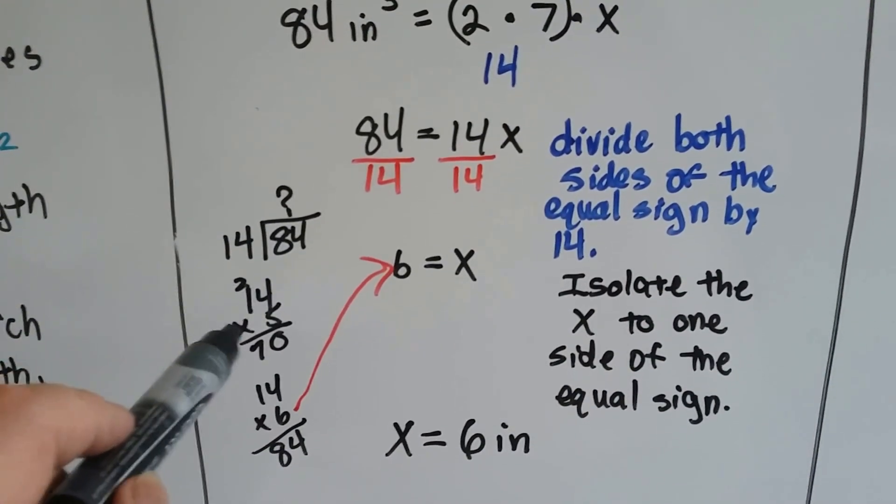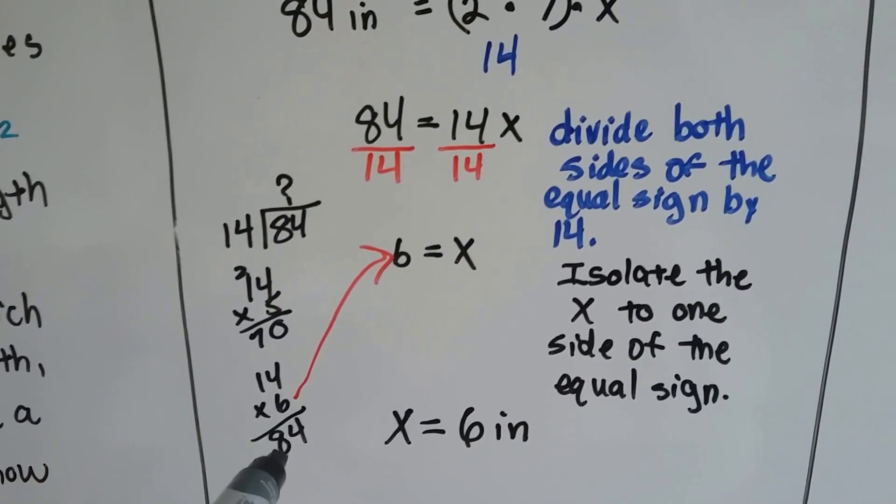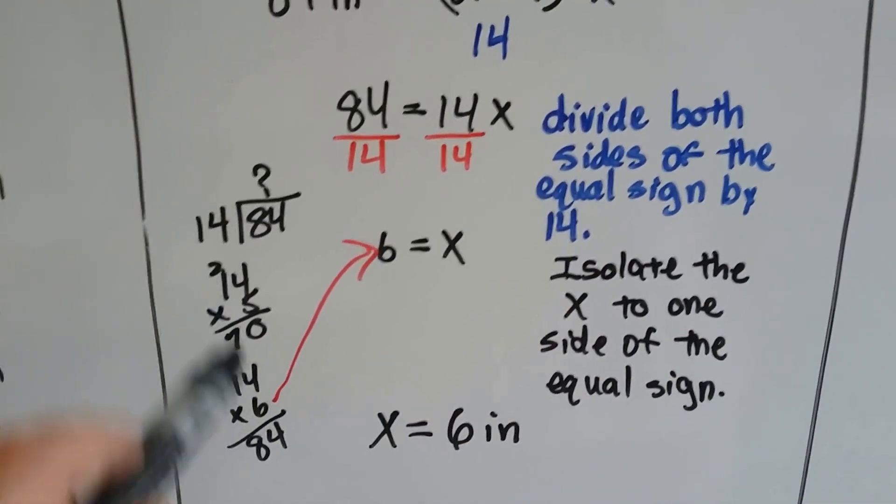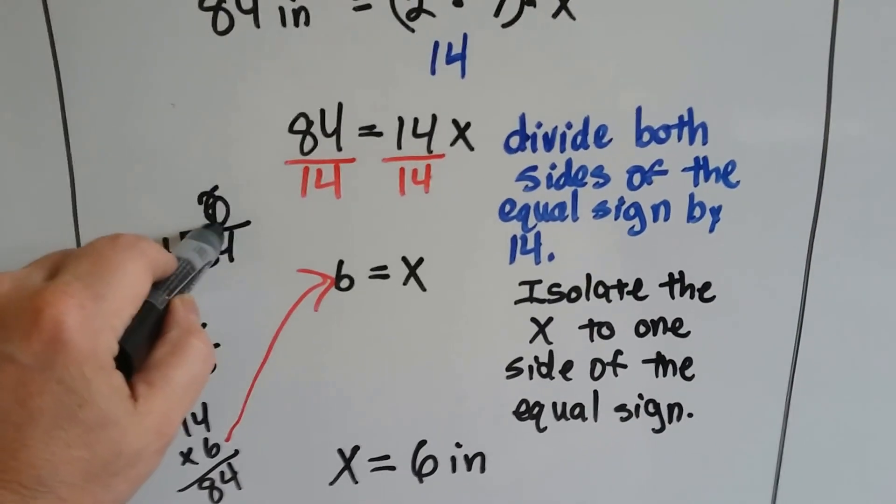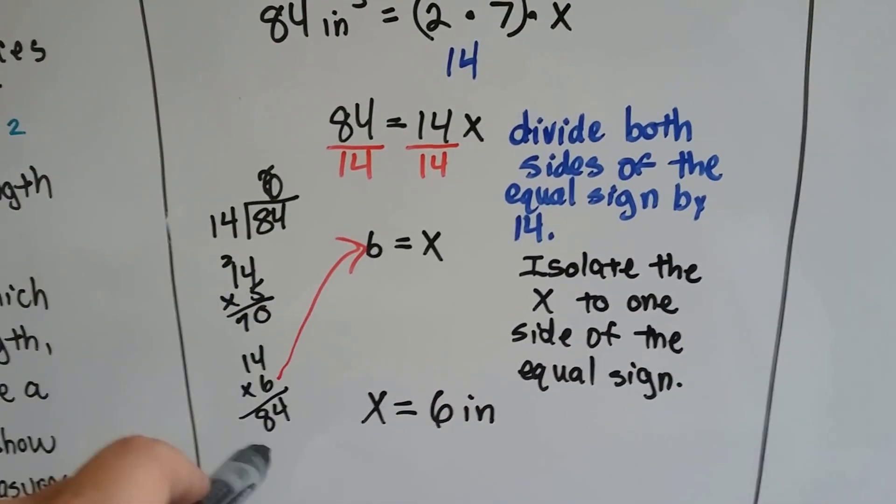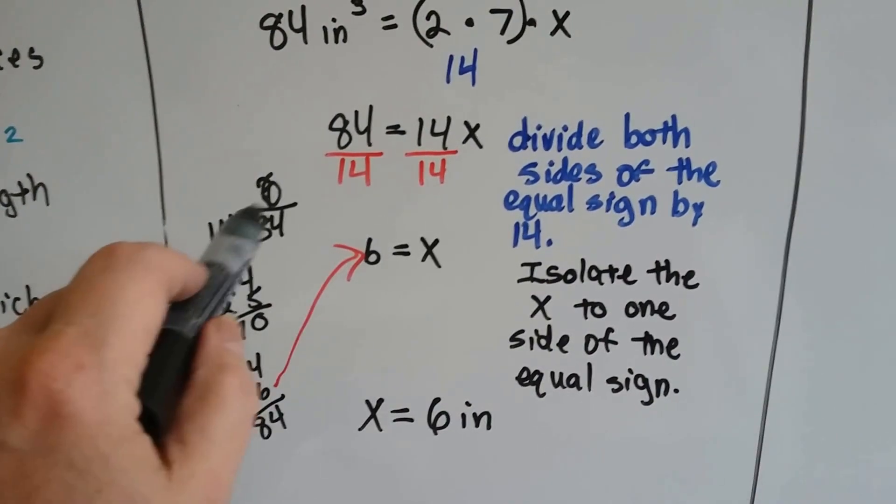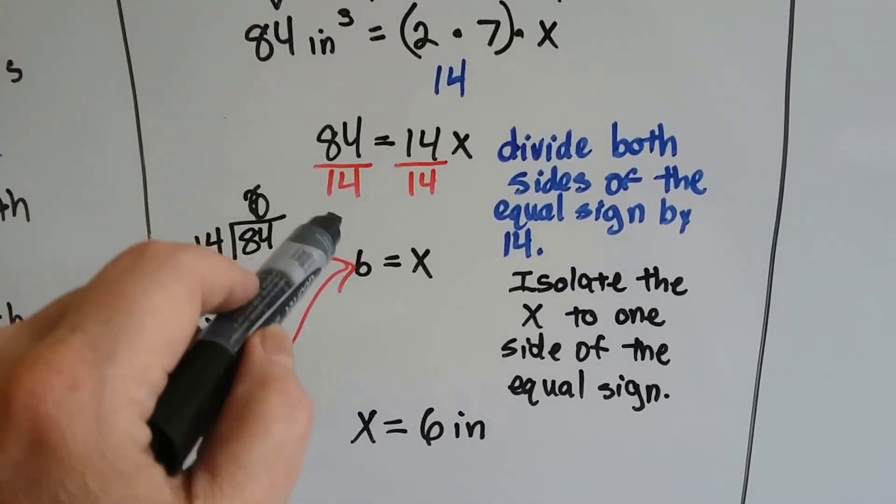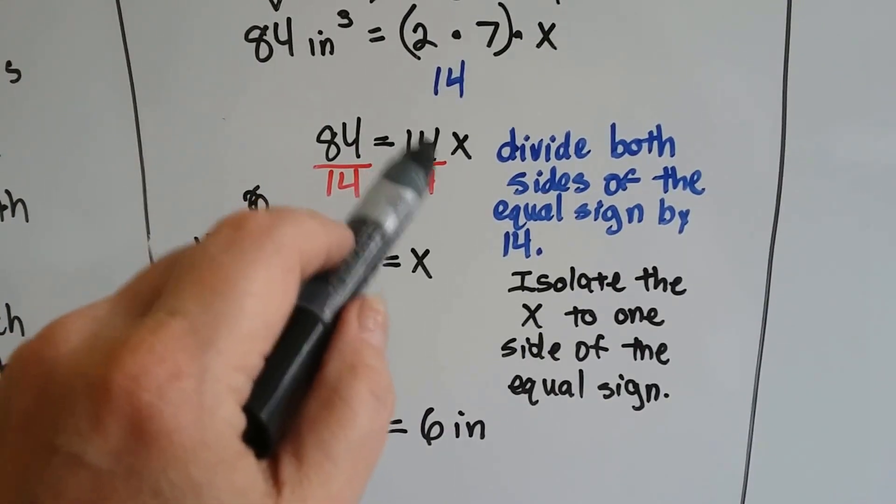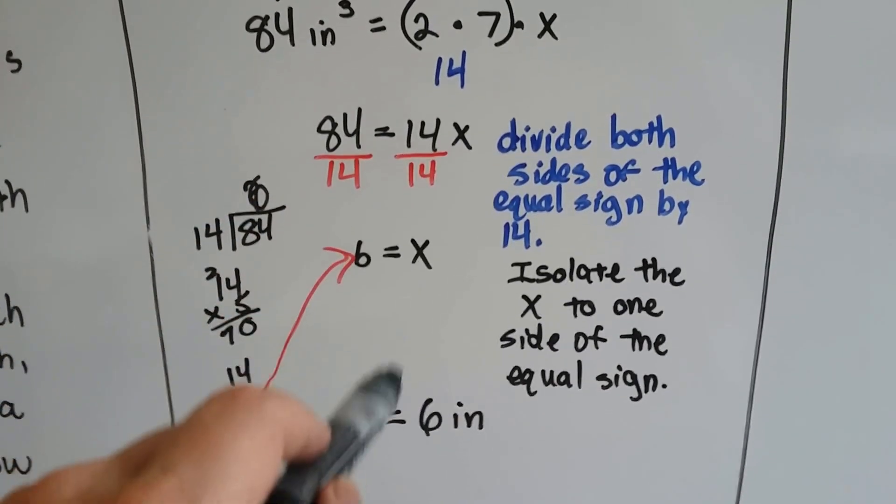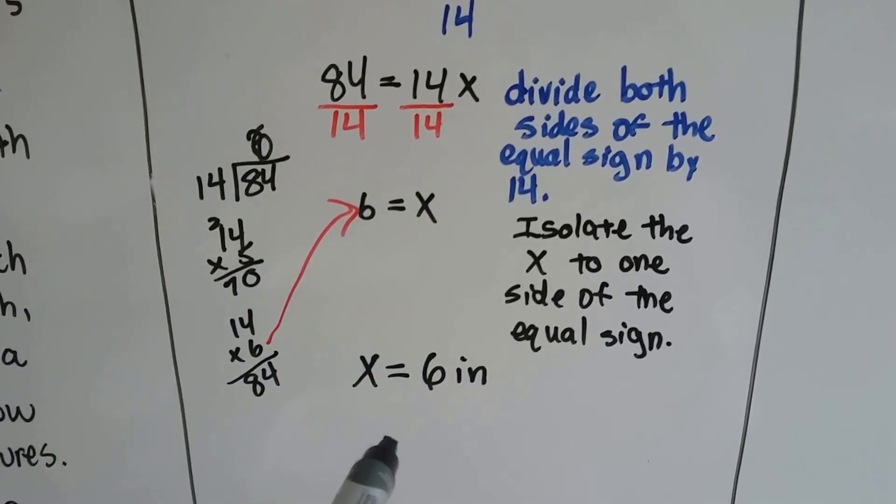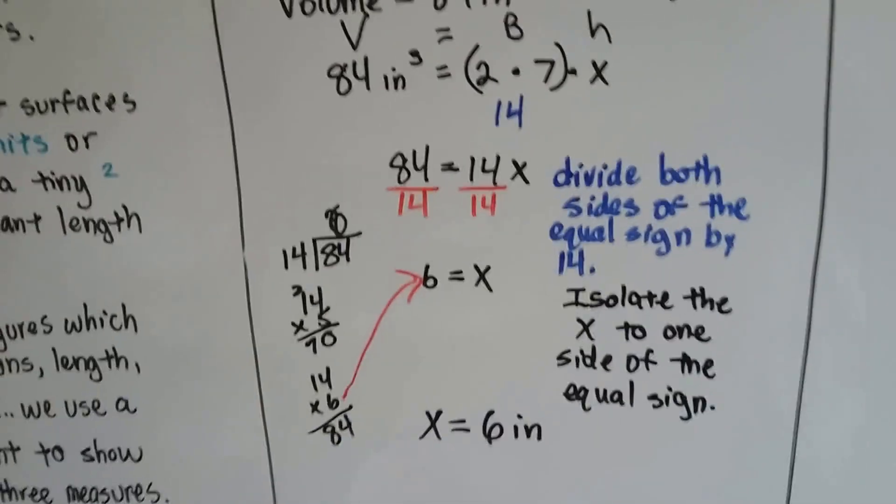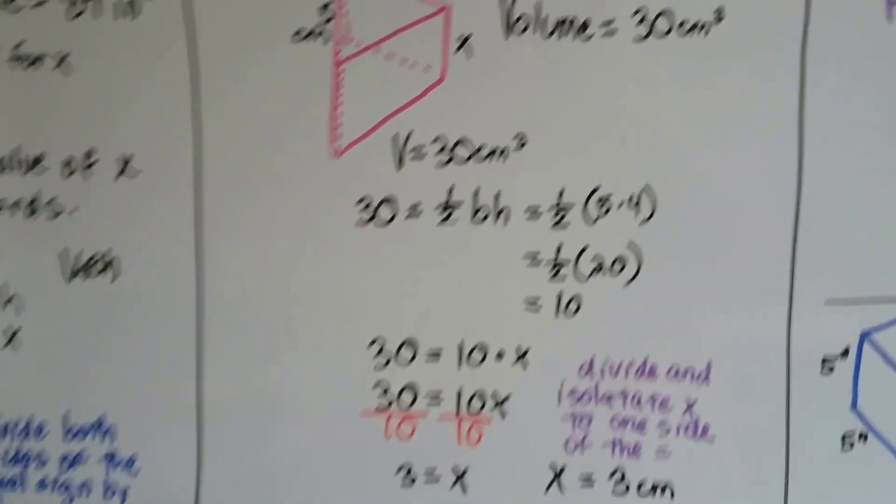84 divided by 14, what is that? Well I did a little multiplication on the side: 14 times 5 is 70, 14 times 6 is 84. Because multiplication is the inverse of division, I know that this now makes this a 6. It was just easier to multiply to find the 6. So I know that this is 6, and now that this is gone, I know that 6 is equal to x. I've solved for x, I've isolated the x to one side of the equal sign. I know x is 6 inches.